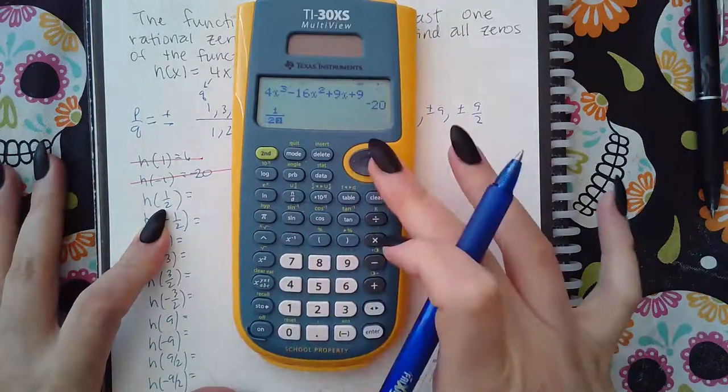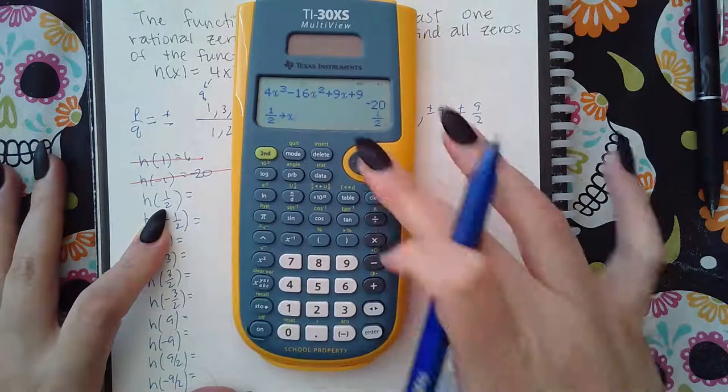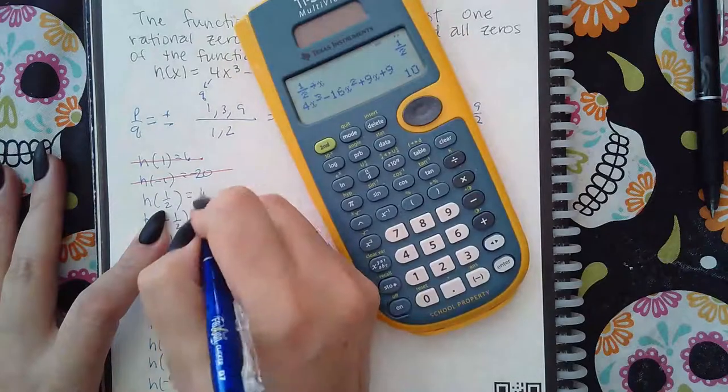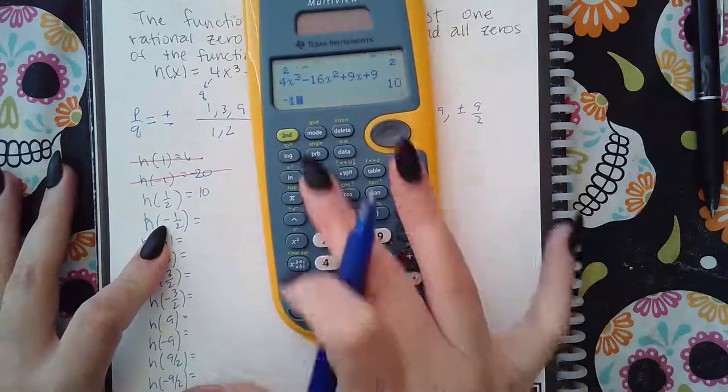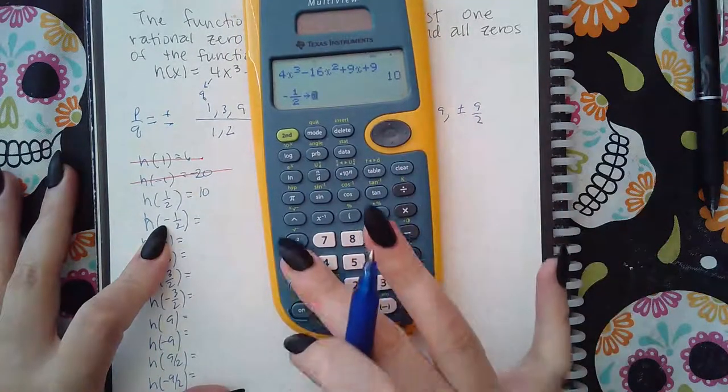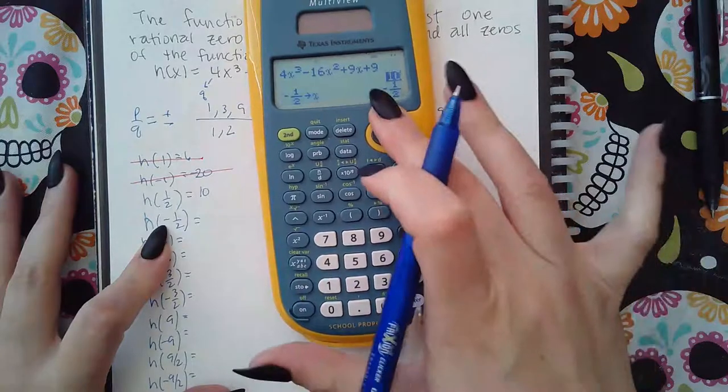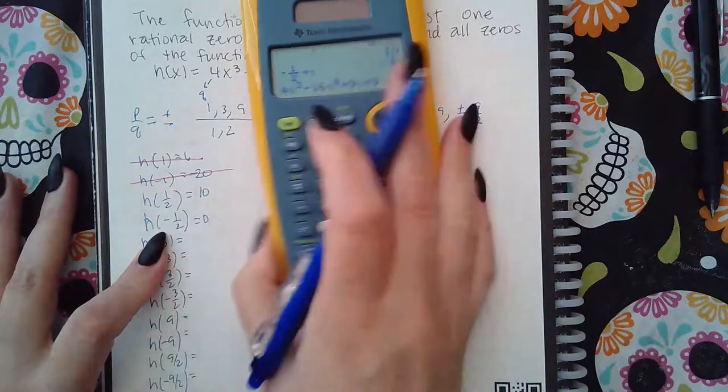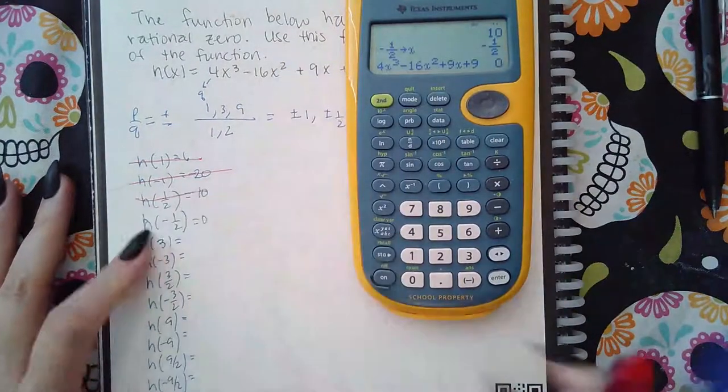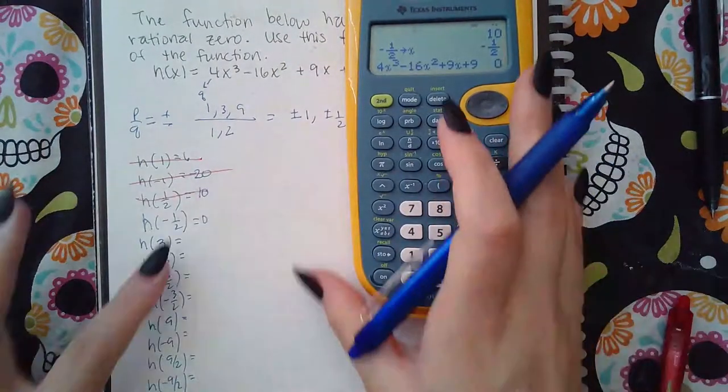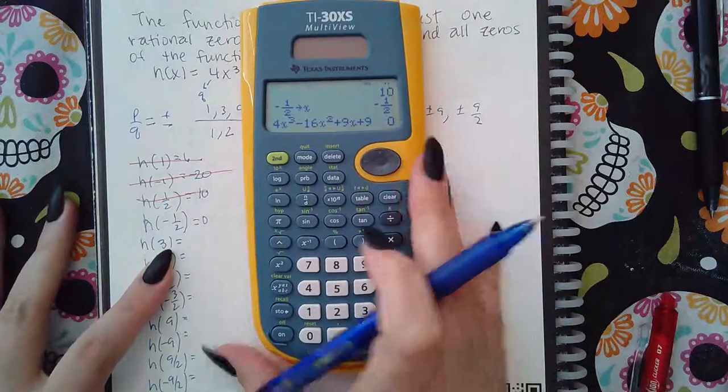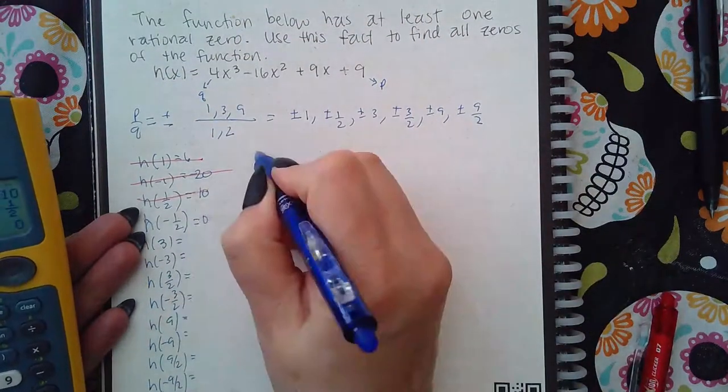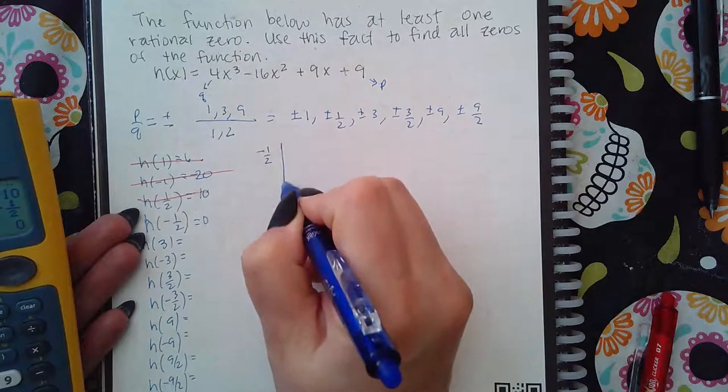Store is X. Go up there. Plug it in. I get 10. Try negative one half. Store is X. Go and plug it in. I get zero. So finally I get zero. Now I'm going to do it again to see what I can... Actually, let's work for it. I figured out that negative one half works.